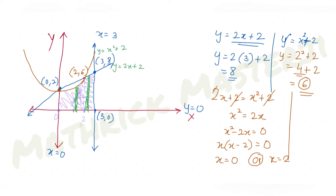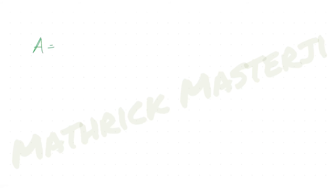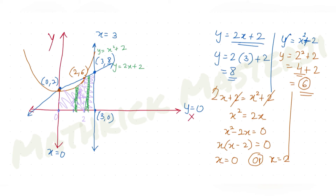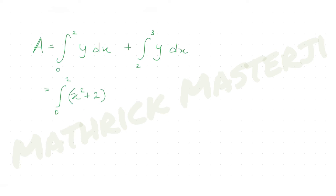To find area A, we integrate. From 0 to 2, we integrate (x squared plus 2) dx using vertical strips between the parabola and y equals 0. From 2 to 3, we integrate (2x plus 2) dx between the line and y equals 0. So A equals the integral from 0 to 2 of (x squared plus 2) dx plus the integral from 2 to 3 of (2x plus 2) dx.